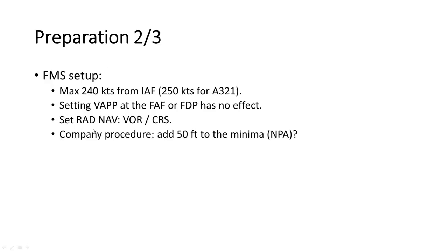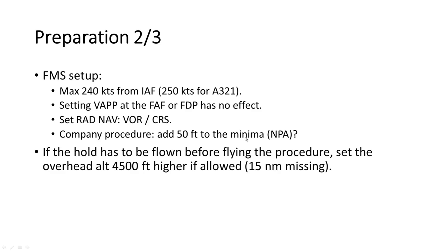You need to set the RATNAV, and at the RATNAV page in the FMS, set the VOR and the course. Most companies have the procedure to add 50 feet to the minima, although not all — please check your company procedures. If a hold has to be flown before flying the procedure, set the overhead altitude about 4,500 feet higher if allowed by the procedure, because 15 miles from the hold will be missing in the track miles.